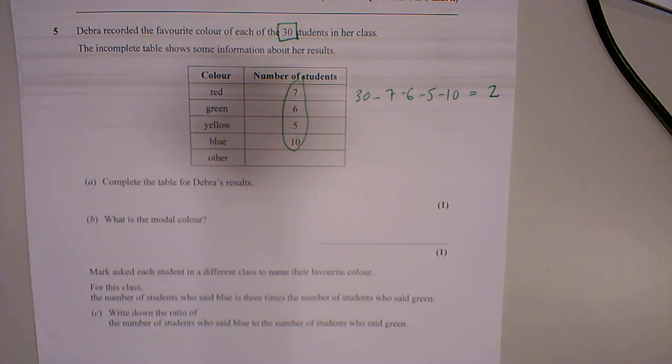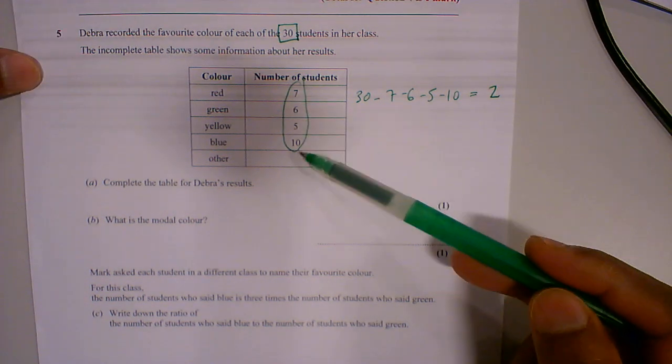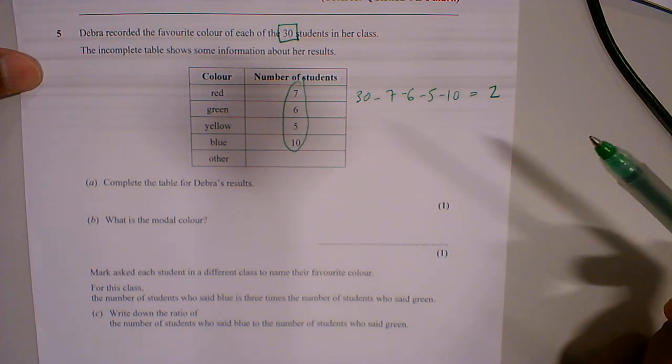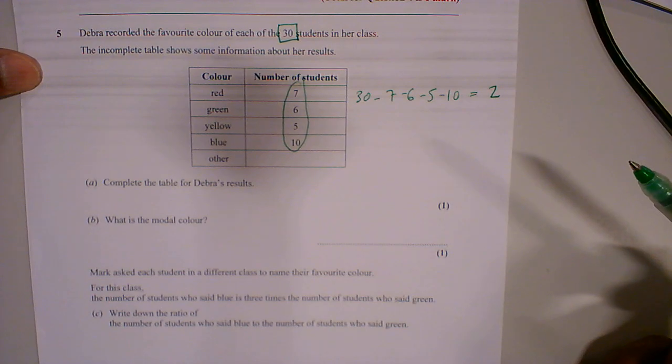So that is the missing number. Okay, you can also add them together and then take away from 30. That's also possible, but it's the same thing. Gives us the same answer.